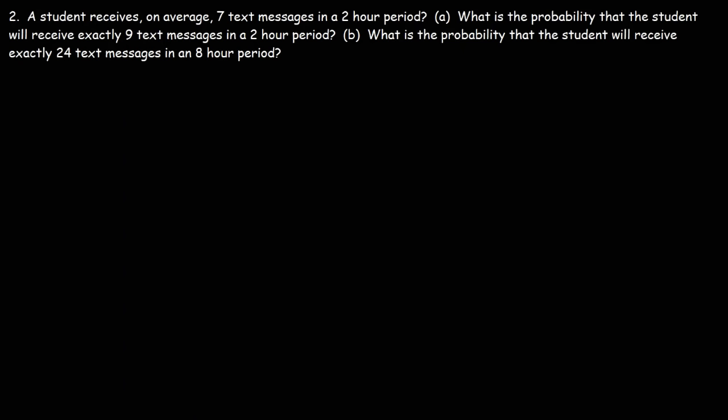Number two: a student receives, on average, 7 text messages in a two-hour period. What is the probability that this student will receive exactly 9 text messages in a two-hour period? Notice that the time interval doesn't change — it's the same. So 7 is the mean, and x is 9, because we want to calculate the probability that the student will receive exactly 9 text messages in that two-hour period.